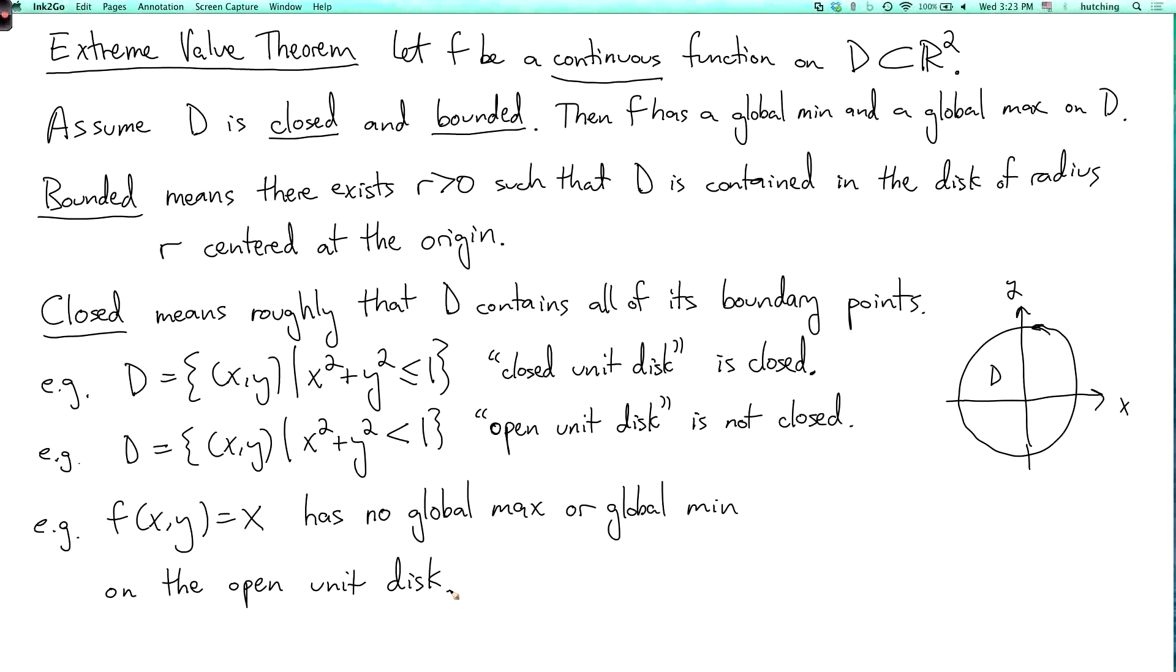Why not? Well what's the largest possible value of f on the unit disk? It's 1, which is attained at the point 1 comma 0 and no other point. So the maximum wants to be 1. But in the open unit disk, we have removed the point 1 comma 0. It's not there anymore. So f does not attain the value of 1.